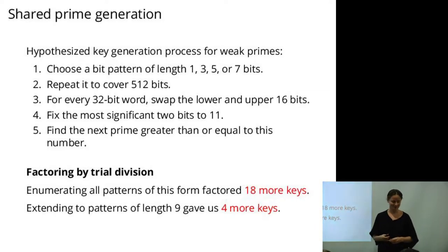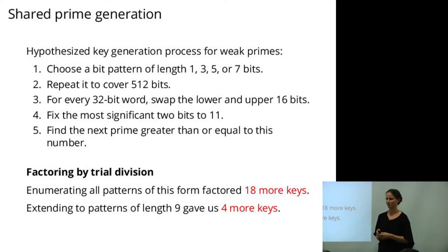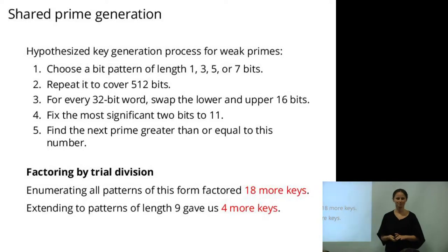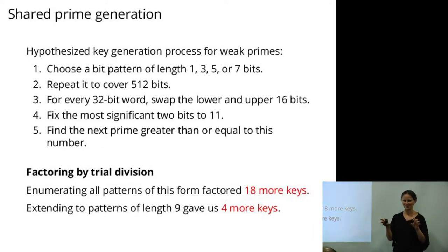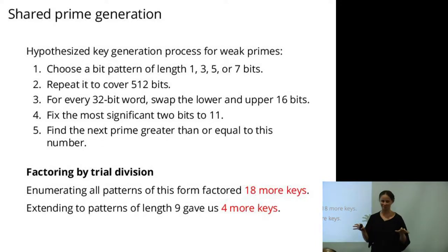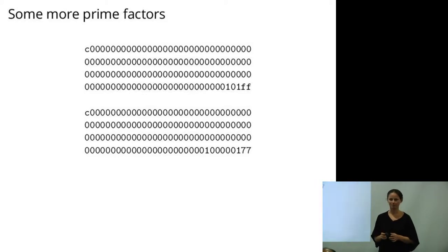We did that. Enumerating all these patterns, we were able to factor 18 more keys. Extending the patterns of length nine, on the theory that maybe these primes are interacting with each other somehow, gave us four more keys. This is the fun part of analysis where you're playing with systems. But this didn't actually explain all of the prime factors that we saw.